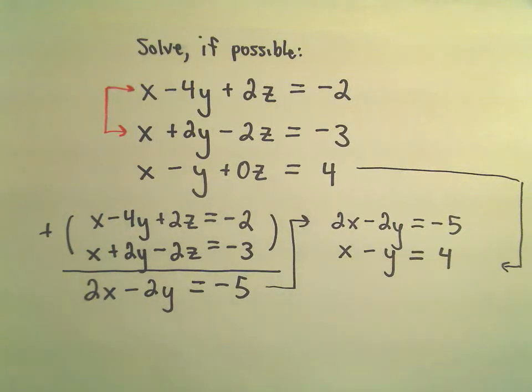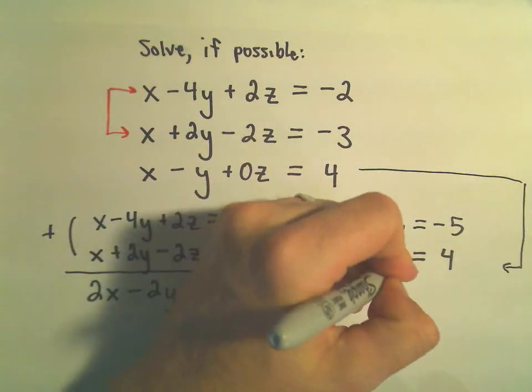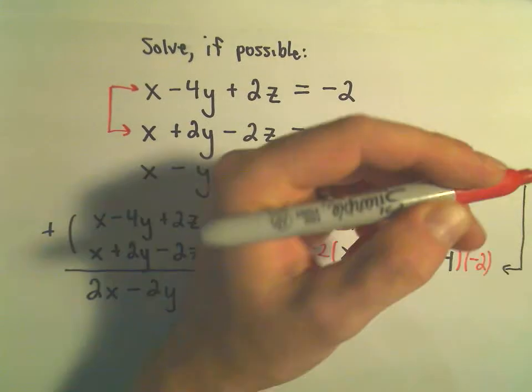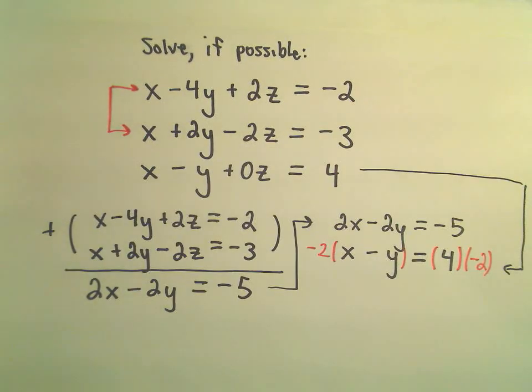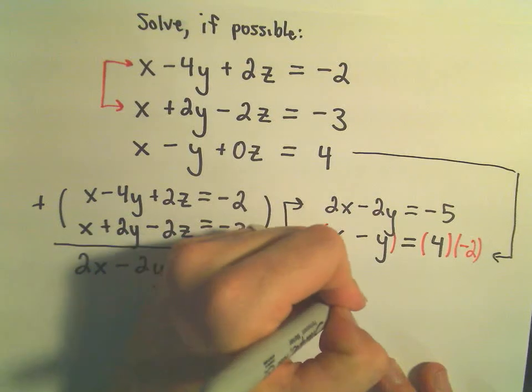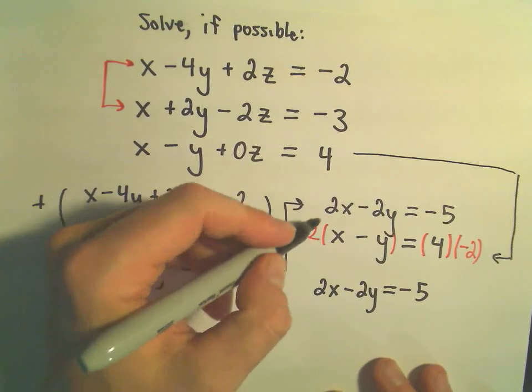It looks like we could multiply this bottom equation, we could multiply both sides by negative 2. So, negative 2 and negative 2. I'm going to copy down my 2x minus 2y equals negative 5, just like it was. And then our second one, if we distribute...